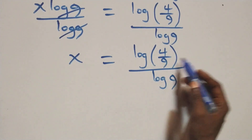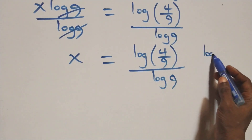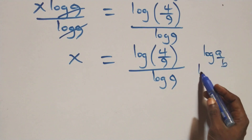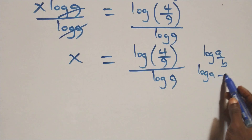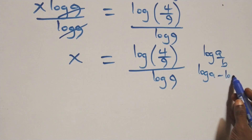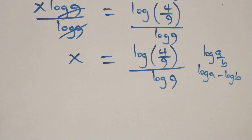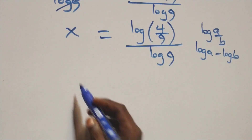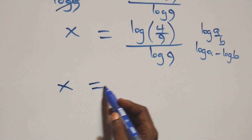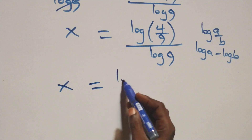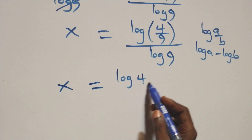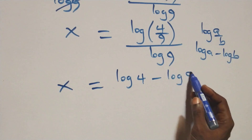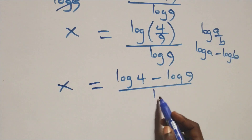This follows from the law of logarithm: when we have log A over B, it is the same thing as log A minus log B.